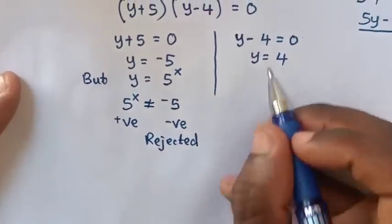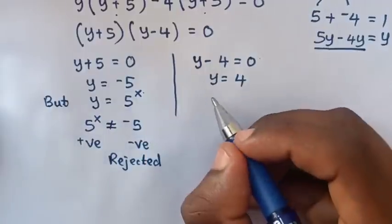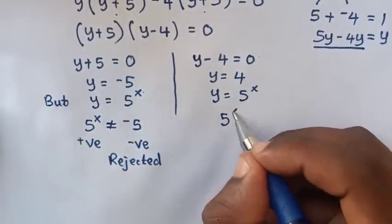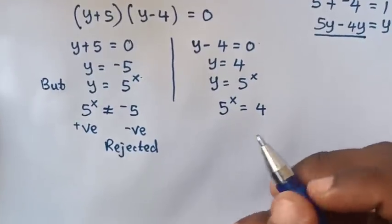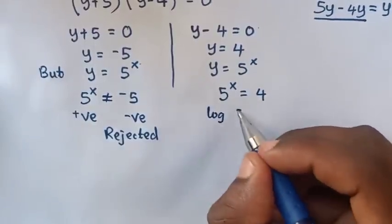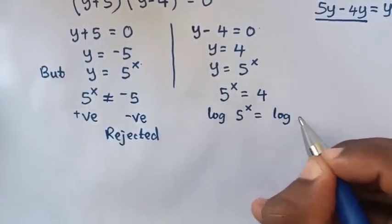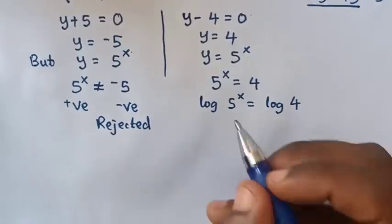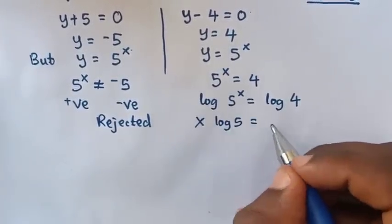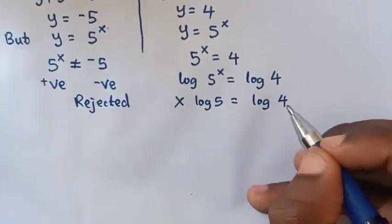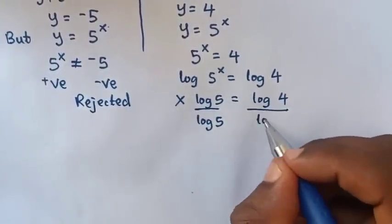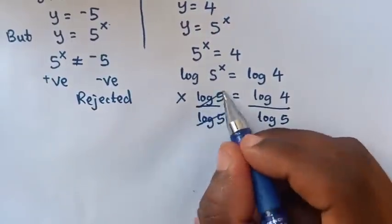In the second case, y equals 5 power x, so we get 5 power x equals 4. We apply log on both sides: log of 5 power x equals log of 4. The power x moves to the front, giving x times log 5 equals log 4. Then we divide both sides by log 5.